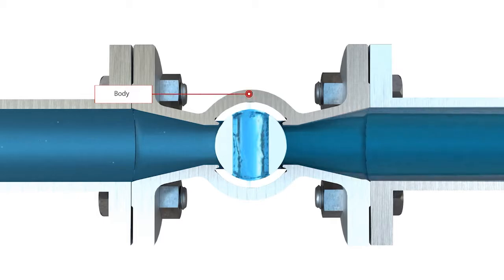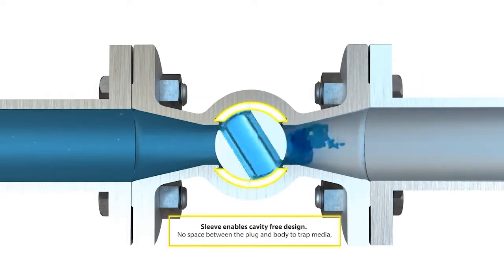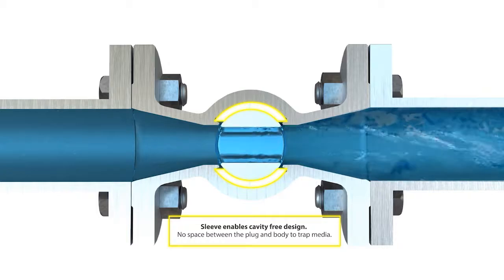The key valve components, the body, the sleeve, and the plug, are in close contact with each other, creating the cavity-free design. This means that there are no spaces between the plug and the body that can trap media when the valve is being operated.